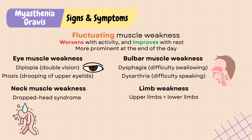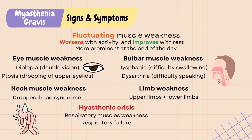A complication called myasthenic crisis occurs when the respiratory muscles are involved, resulting in respiratory failure that requires intubation and mechanical ventilation. Myasthenic crisis is a medical emergency and should always be a priority.